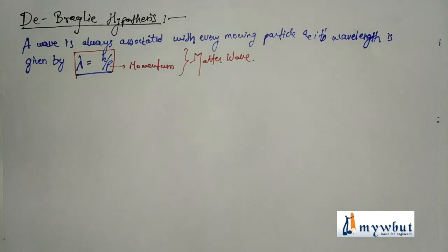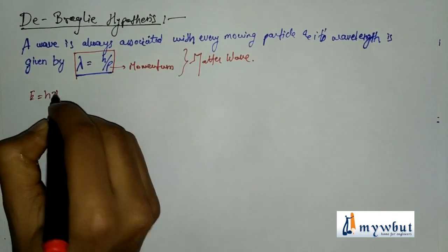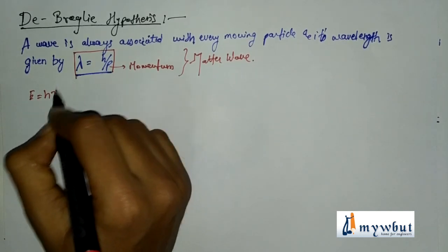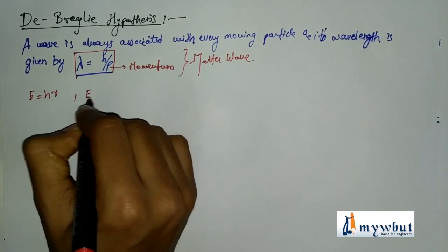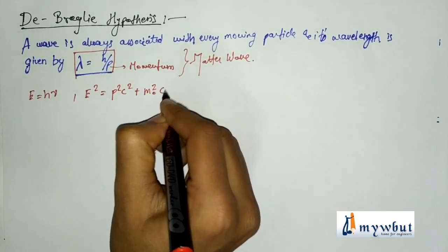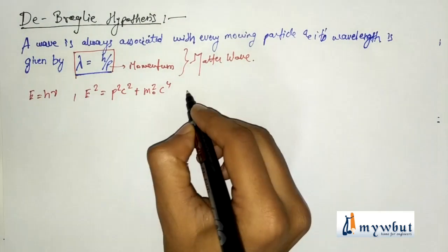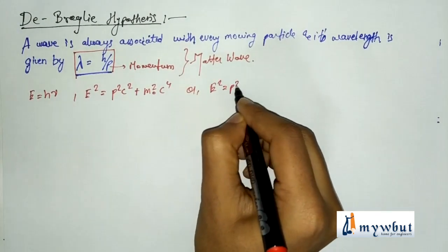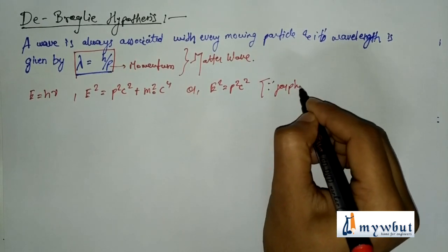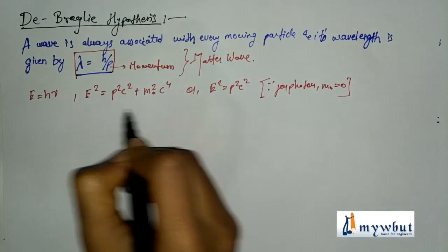To prove the De Broglie equation, we start with E = hν. For a relativistic particle, the square of relativistic energy is: E² = p²c² + m₀²c⁴, where c is the velocity of light.